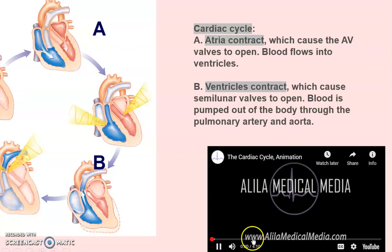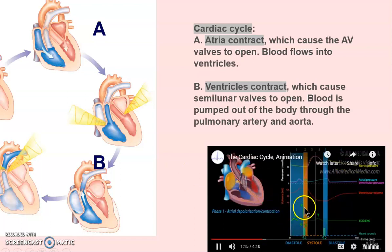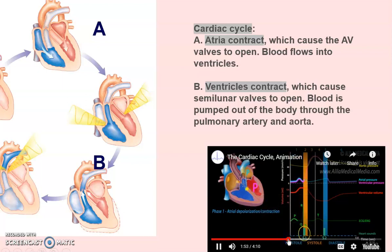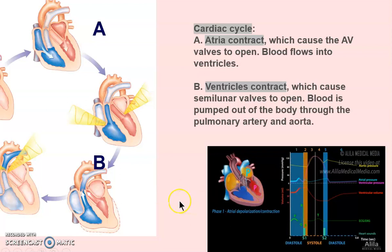The cardiac cycle ties in with the EKG, which I really like. When there's pressure in the ventricles, the semi-lunars open up; when there's pressure in the atria, the AV valves open up. Here we can see the atria compressing, opening the AV valve, and blood flowing into the ventricles.